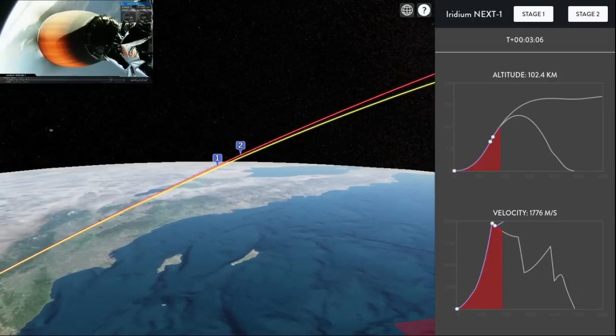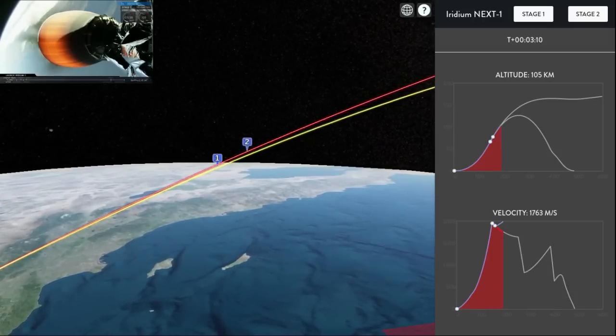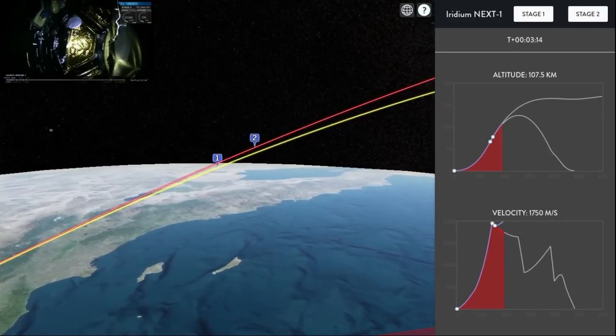T plus 2 minutes and 48 seconds into flight. We've had successful shutdown separation of the Falcon 9 first stage. The second stage engine has lit, you can see it there. We're coming up on 3 minutes as we head into low Earth orbit. Everything looking good. It means we're on our way to orbit.